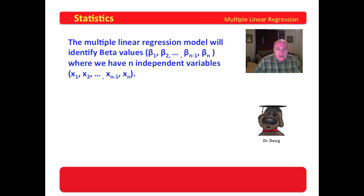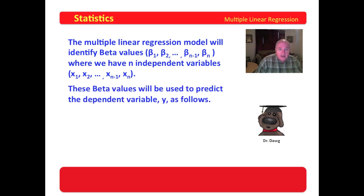Now, the multiple linear regression model will identify beta values like beta 1, beta 2, all the way up to beta n. If we have n independent variables, then we will have n betas. And these betas will match down to the independent variables so that we can develop a linear model.